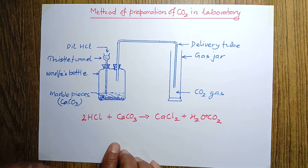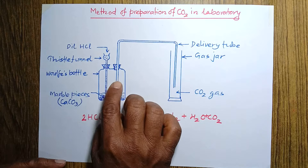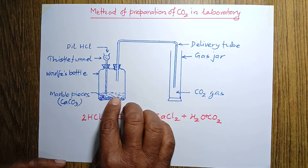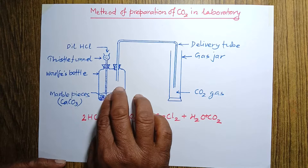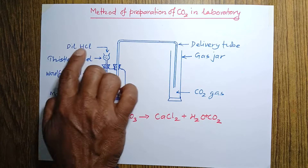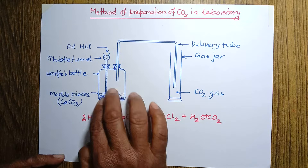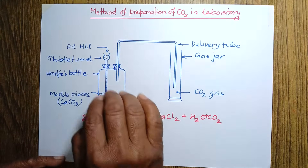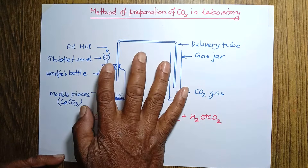Another point: the tip of the delivery tube should be outside the dilute hydrochloric acid. Otherwise, if it is deep inside, then the carbon dioxide gas collected in the wolf bottle cannot come out, and it may burst — because of high pressure the wolf bottle may burst.